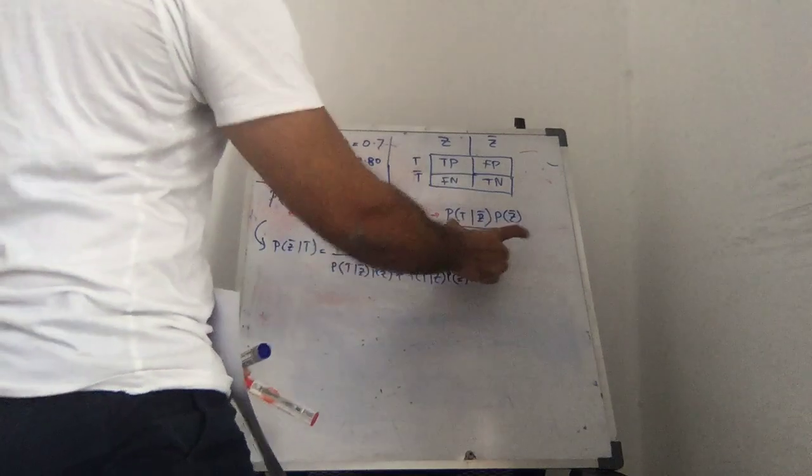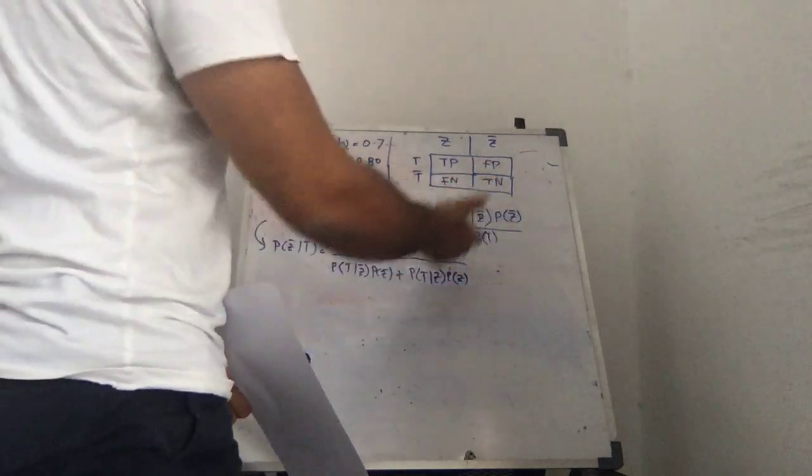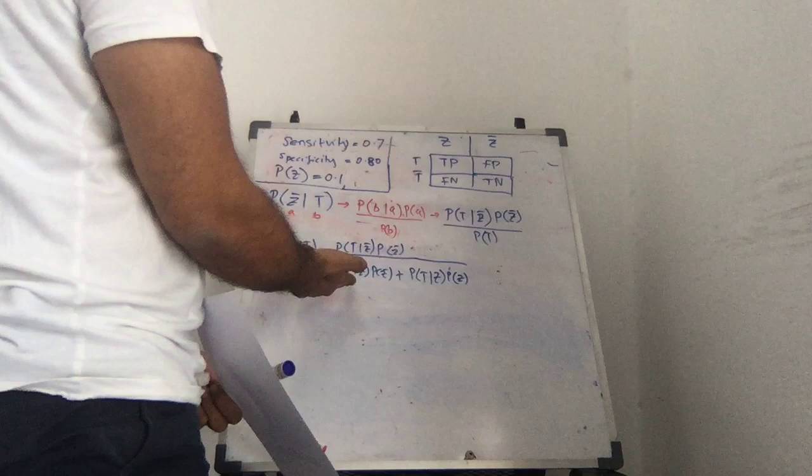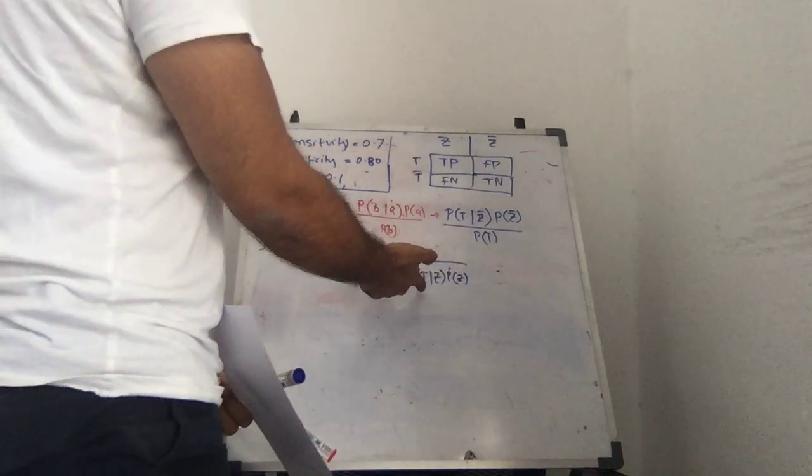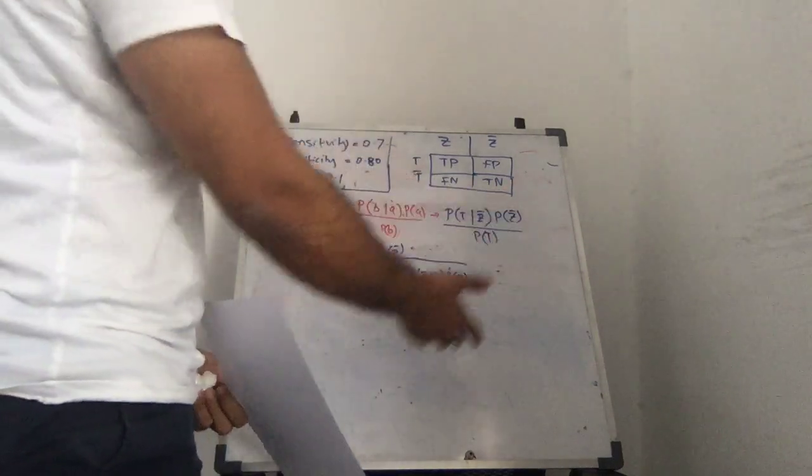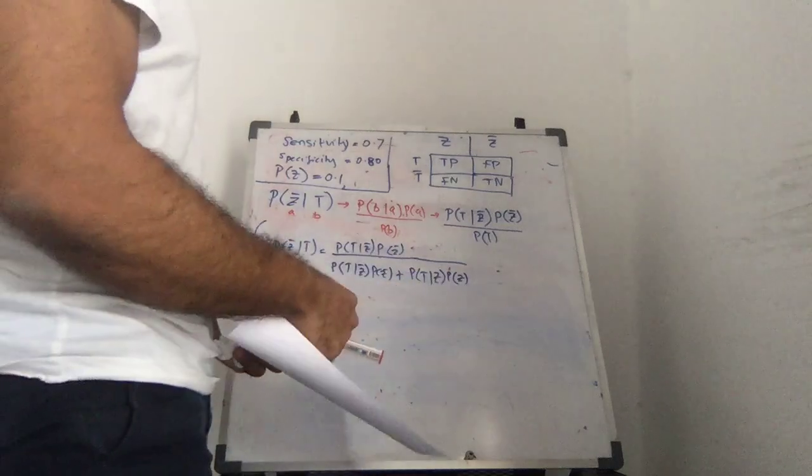In what ways can T be true? Well, someone can not have the disease and the test can be positive, someone can have the disease and the test can be positive. Those are the only two ways that this can be true, right? So we just have those two parts, makes sense.